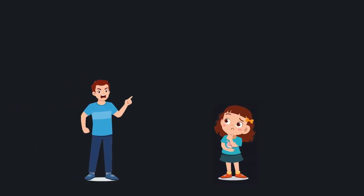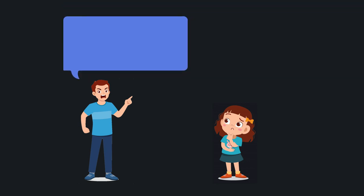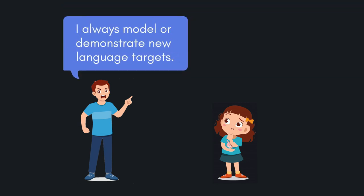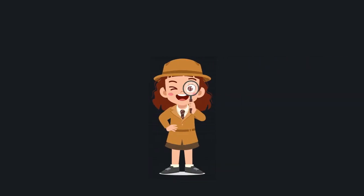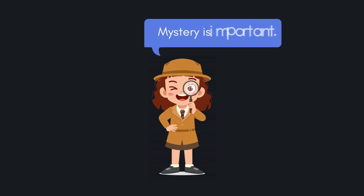This is a dimension of teaching that teacher-centered methods generally neglect. When a teacher explains clearly, models clearly, demonstrates clearly, tells the children what they are going to learn before teaching it, or uses many other methods common in a teacher-centered classroom, the teacher is not letting the children anticipate enough. If instead we introduce new language targets through mystery and puzzles, or surprise the children with new language targets when playing a game, the children are much more likely to be engaged and interested in learning.